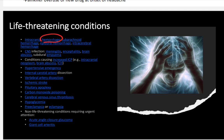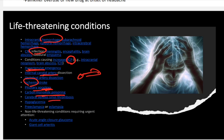Life-threatening conditions in headache include hemorrhage, infection, increased intracranial pressure, hypertension, carotid artery or vascular causes, stroke, pituitary apoplexy, carbon monoxide poisoning, cerebral venous sinus thrombosis, hypoglycemia, preeclampsia, and eclampsia.